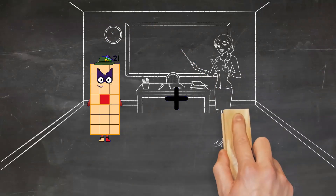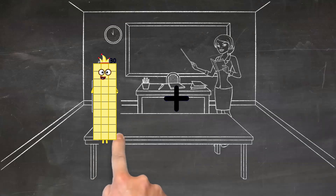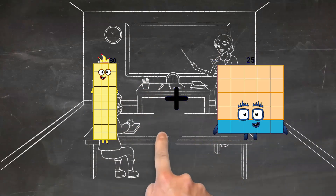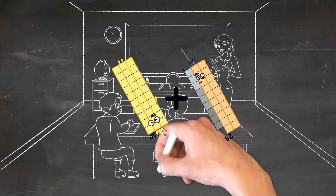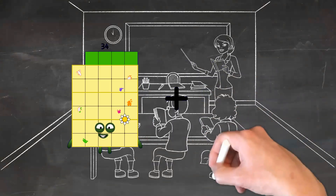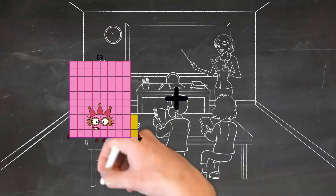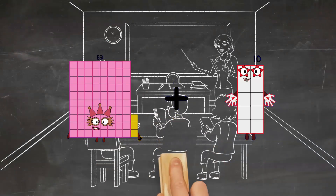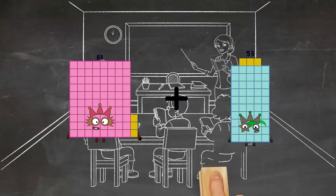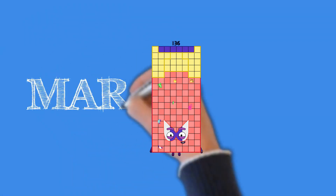30 plus 29 equals 59. 83 plus 53 equals 136.